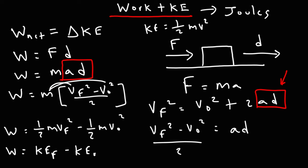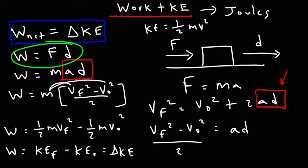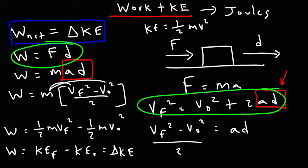The final kinetic energy minus the initial kinetic energy we can replace with the change in kinetic energy. So that is how we can derive this equation using work equals force times displacement and V final squared equals V initial squared plus 2AD. That's how you can derive the work-energy theorem.